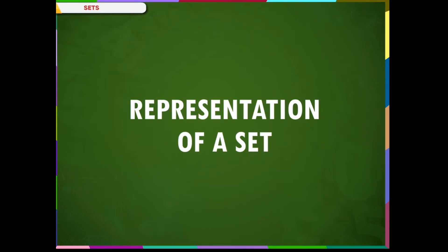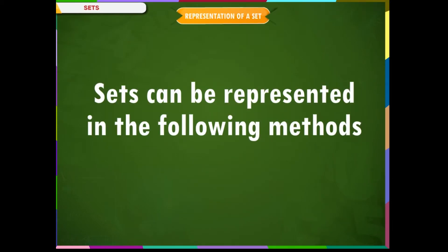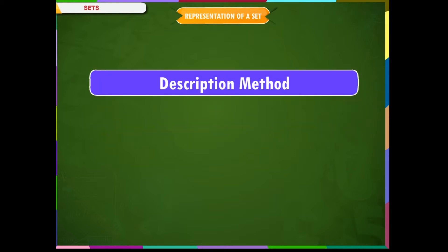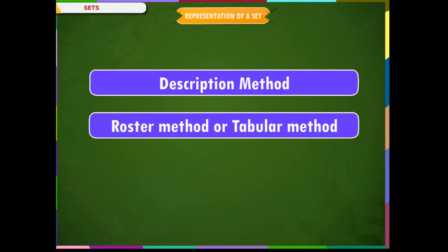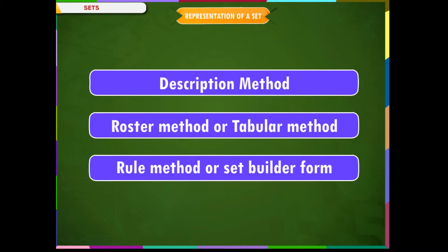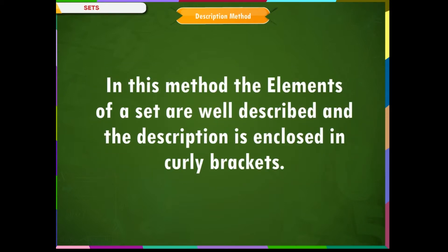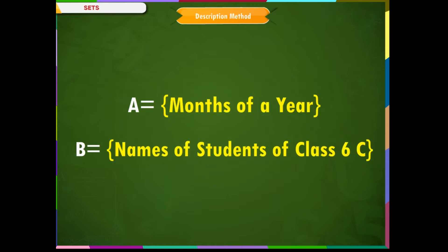Representation of a set. Sets can be represented in the following methods: 1. Description method. 2. Roster method or tabular method. 3. Rule method or set builder form. In the description method, the elements of a set are well described, and the description is enclosed in curly brackets. For example, A = {the months of a year}, B = {the names of students of class 6C} in curly brackets.